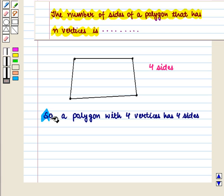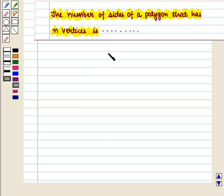So we get a polygon with four vertices has four sides. Now let us take five points and we join these points. We see by joining these points we get a polygon having five sides.